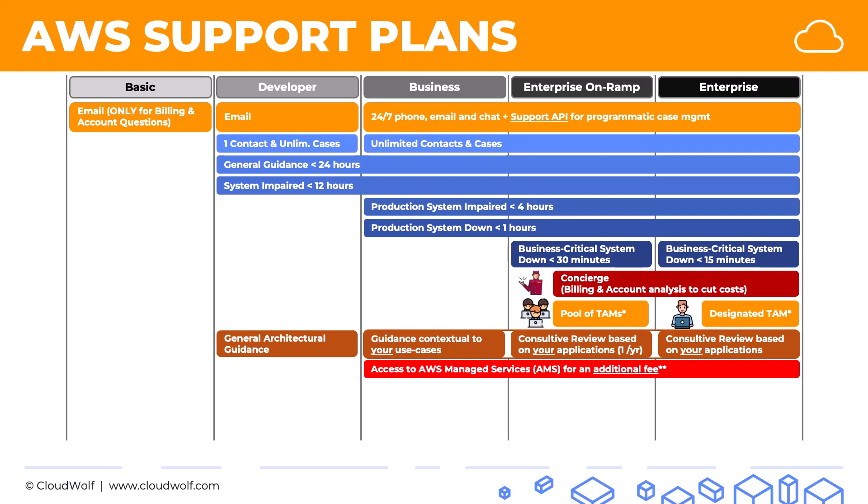In the business, enterprise on ramp, and enterprise plans, you get access to AWS Managed Services (AMS) for an additional fee. AMS means you can augment your existing team by adding, in effect, people from the AWS side — a cloud service delivery manager, a cloud architect, and access to the AMS security team. They won't physically join your team or be your employees, but they'll be available to help you build things. That will cost an additional fee.